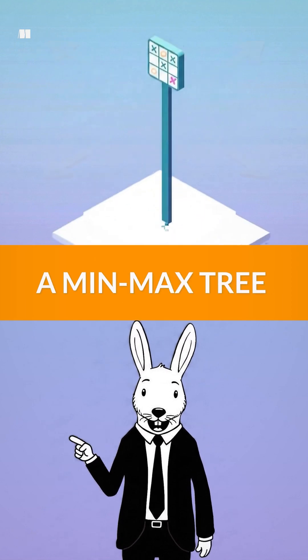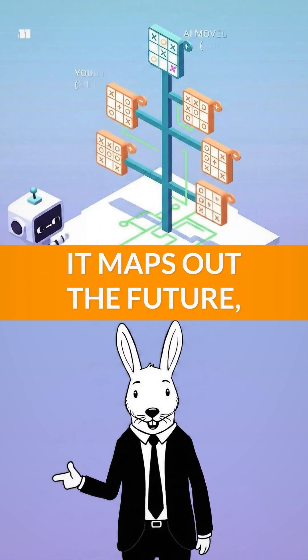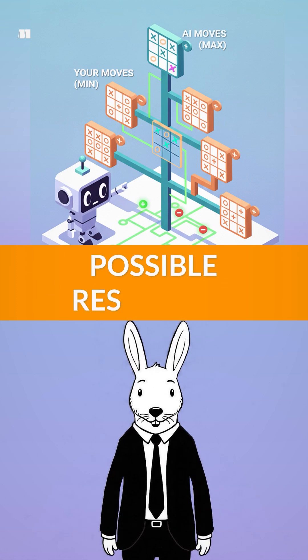But an AI sees it with a min-max tree. It maps out the future, alternating between its moves and all of your possible responses.